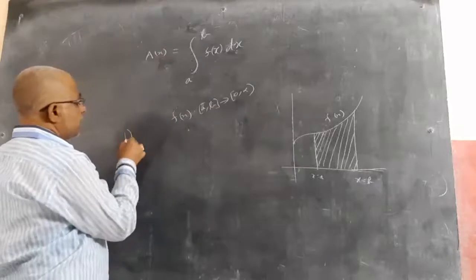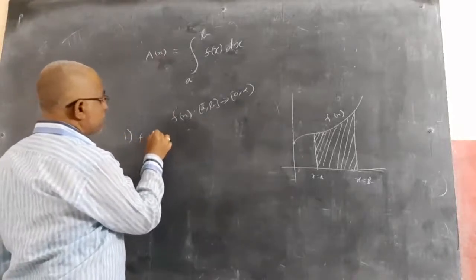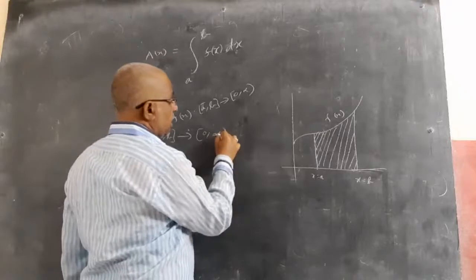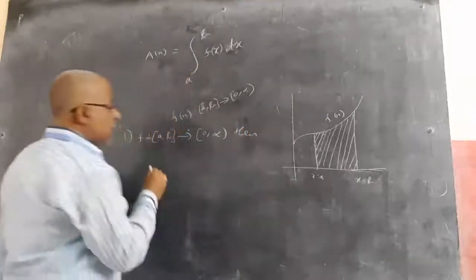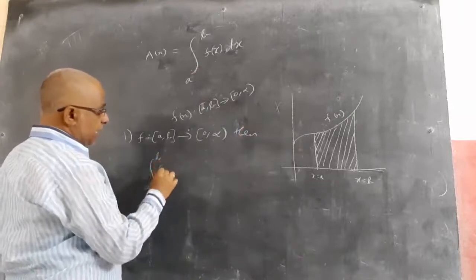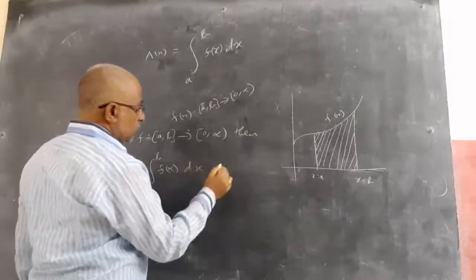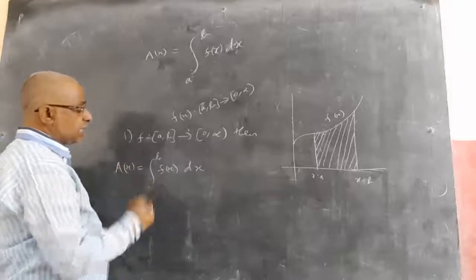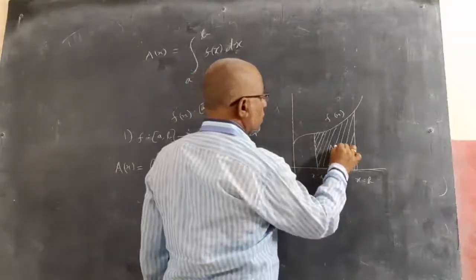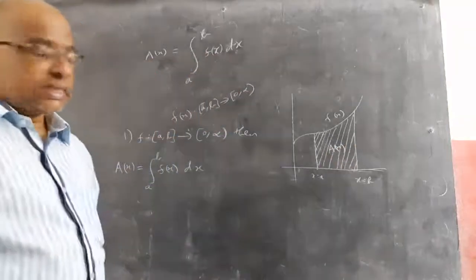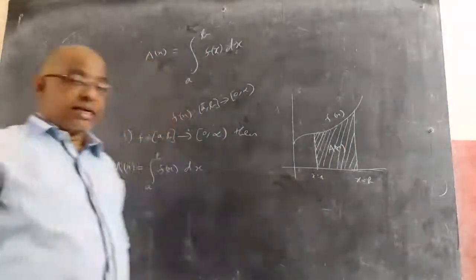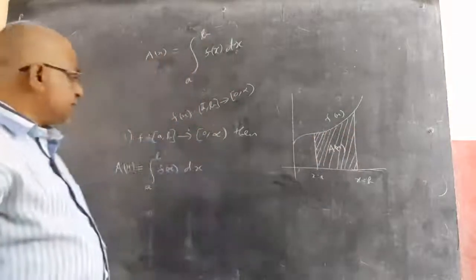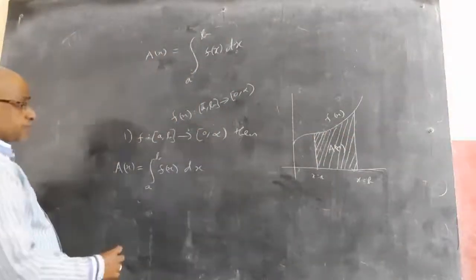First point: if f is a mapping from [a, b] to [0, infinity), then integral of a to b f(x) dx is known as the area under the curve — A(x) — the area under the curve made with x-axis between the limits a and b. So this shaded region is known as the area under the curve.